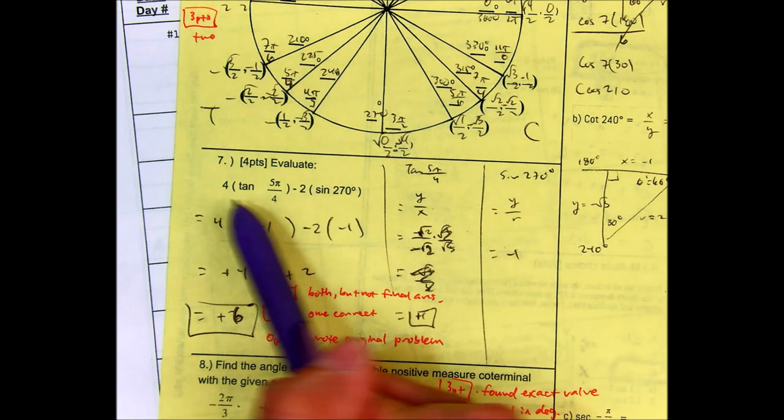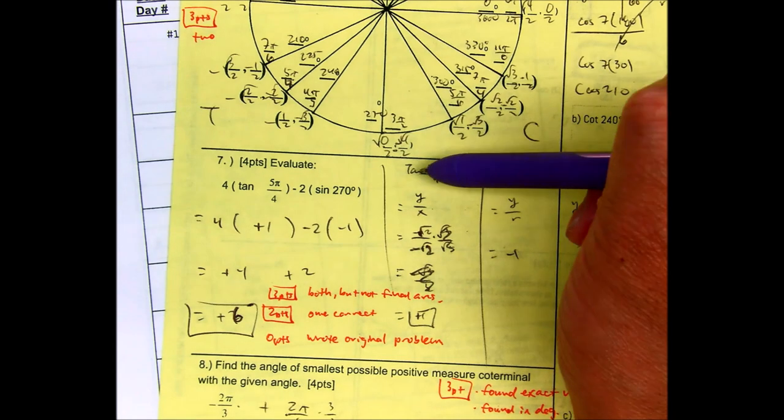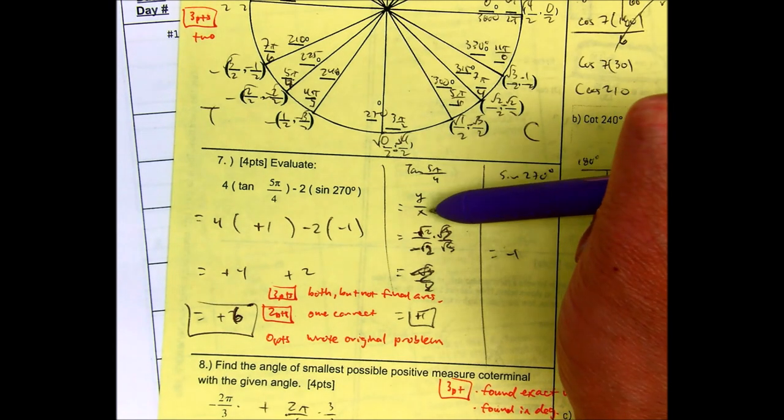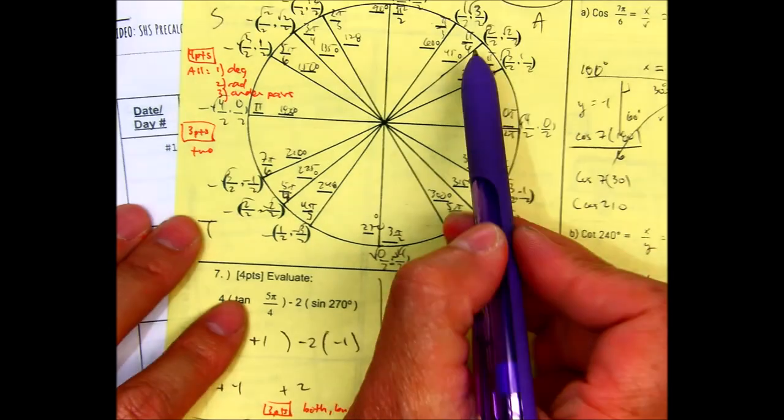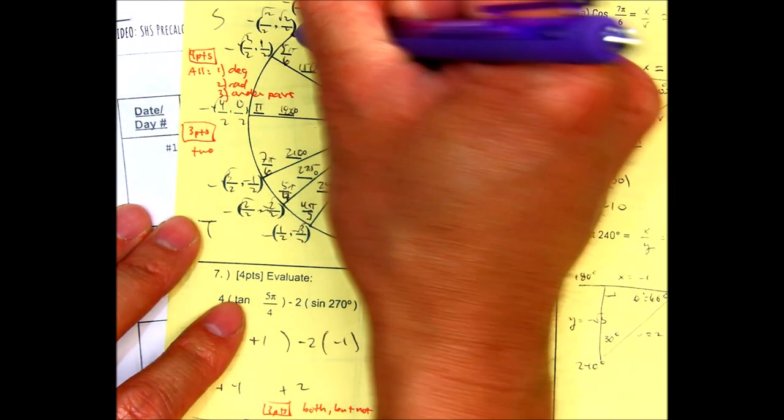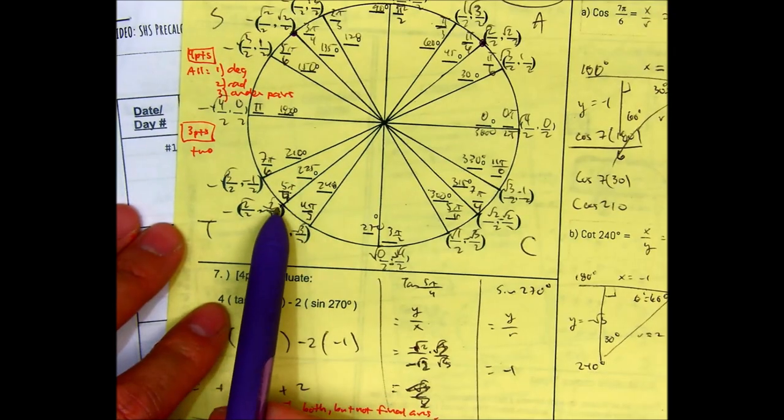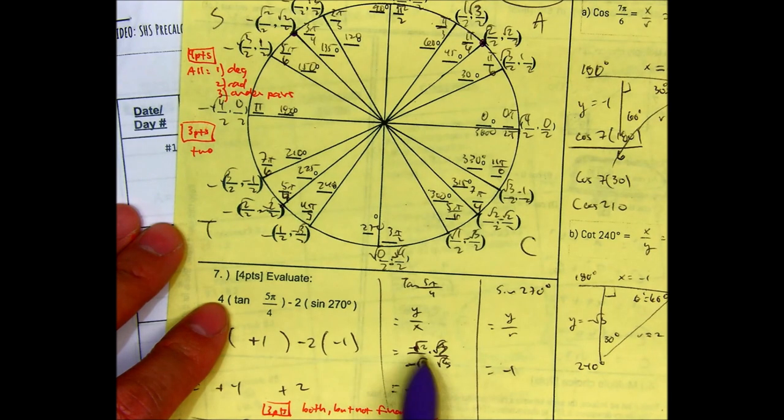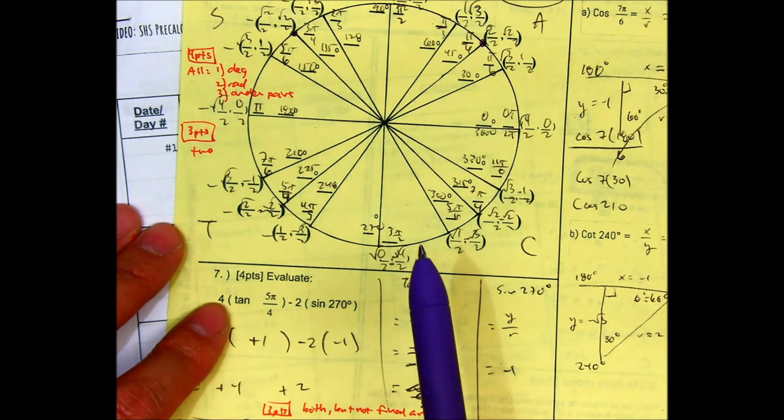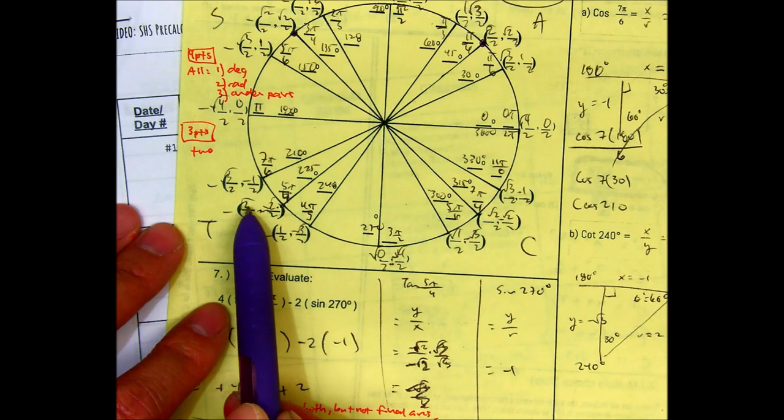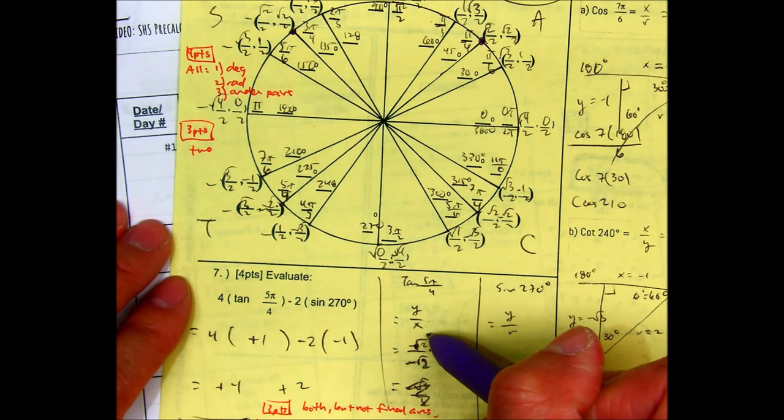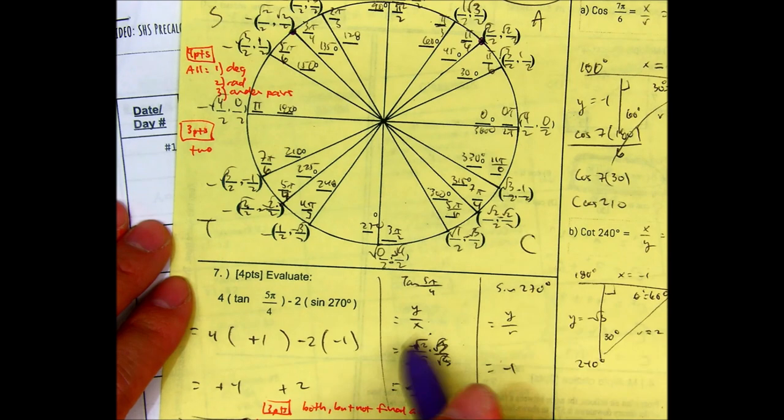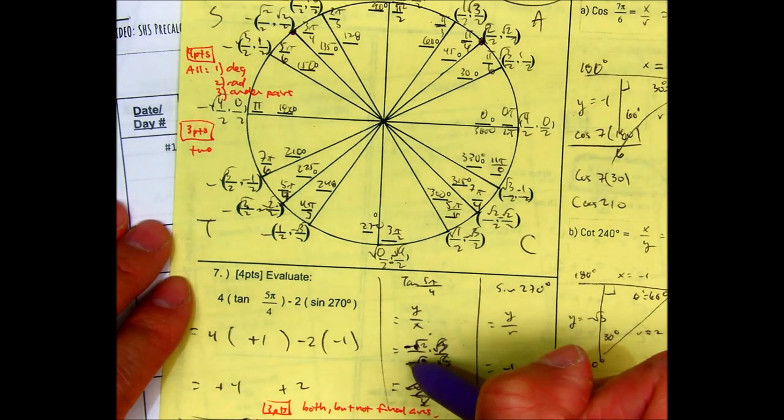This problem says 4 times tangent of 5 pi over 4 minus 2 times sine of 270. I'm going to find the tangent at 5 pi over 4. Tangent is y over x. If I put my finger at 5 pi over 4, 1, 3, 5, 5 pi over 4. Tangent is y over x. So that would be radical 2 over negative radical 2. Here they cancel. They're both negative. And negative divided by negative is a positive.